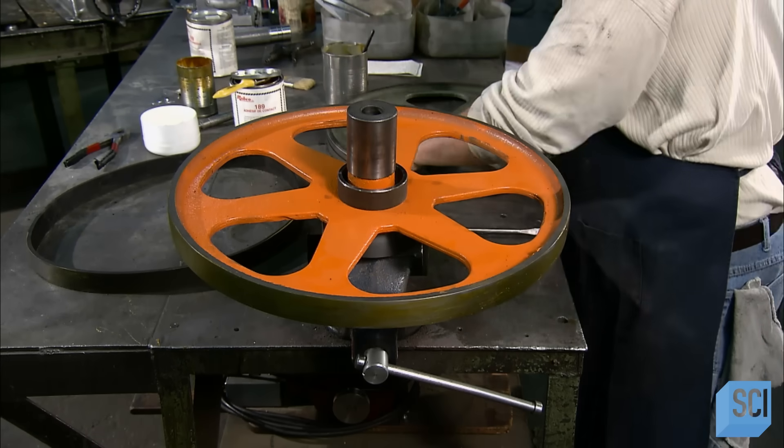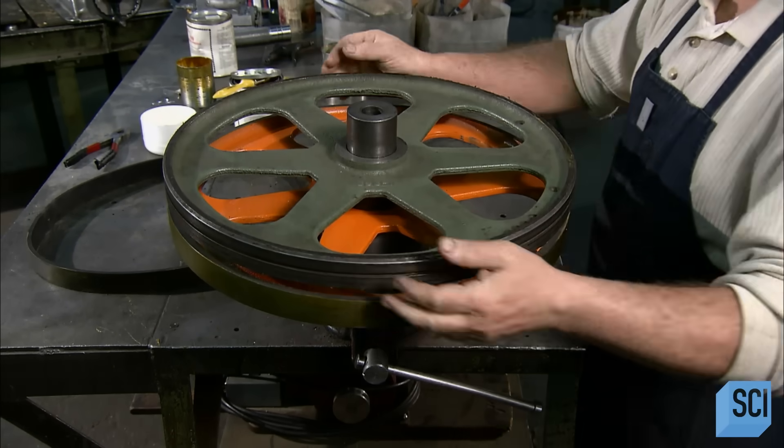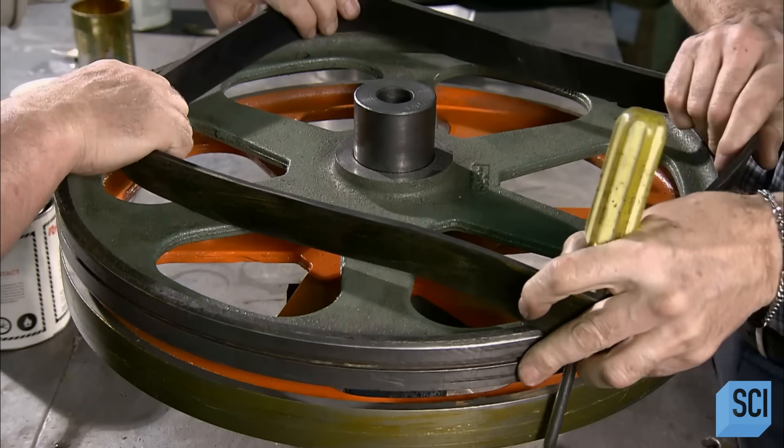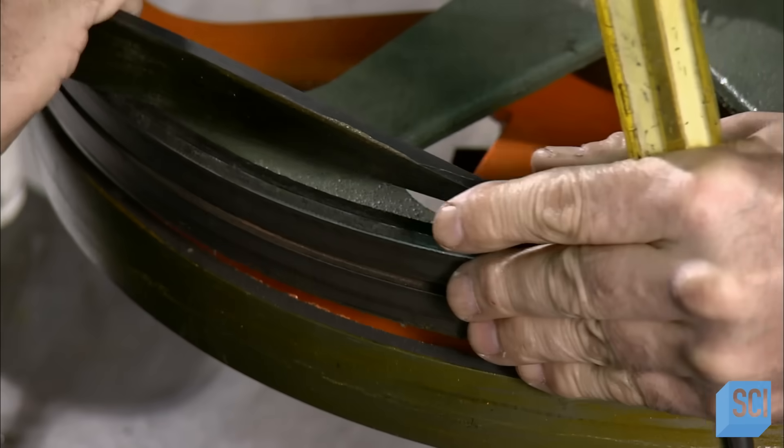Those cast iron wheels need a rubber edge to ensure the blade moves smoothly and without slipping. Workers position a guide over the first wheel, then slip a rubber band onto the guide.